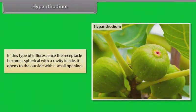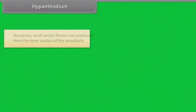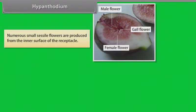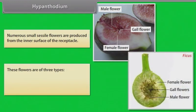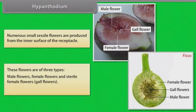In hypanthodium, the receptacle becomes spherical with a cavity inside. It opens to the outside with a small opening. Numerous small sessile flowers are produced from the inner surface of the receptacle. These flowers are of three types: male flowers, female flowers, and sterile female flowers (gall flowers). Example: Ficus.